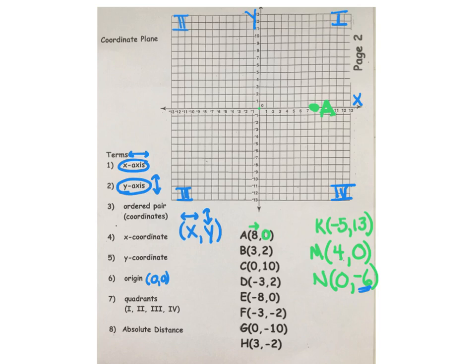Go ahead, plot your points. Pause the video and when you're completely done let's compare your results to my results. Pause your video and plot letters A through H.